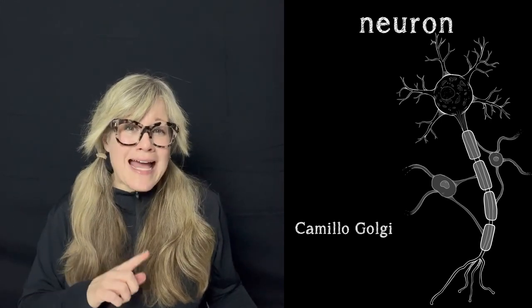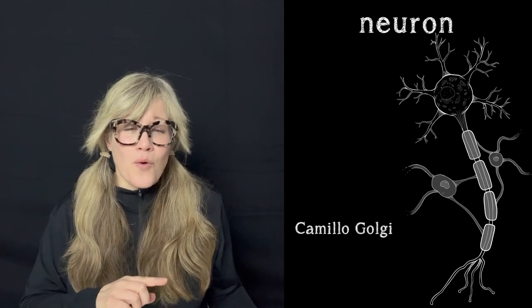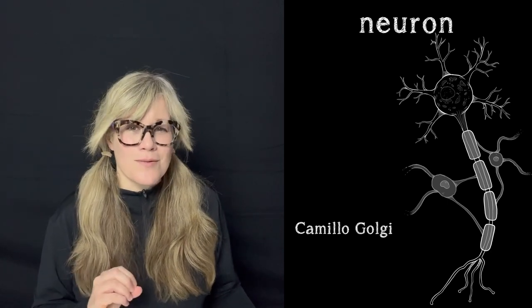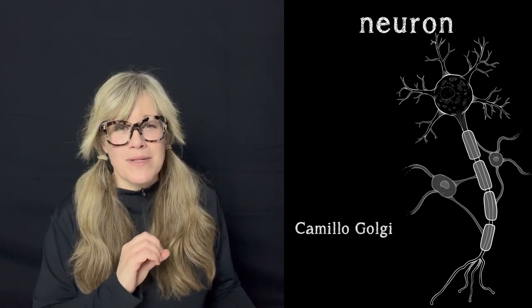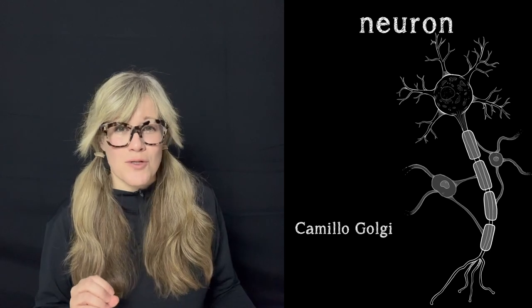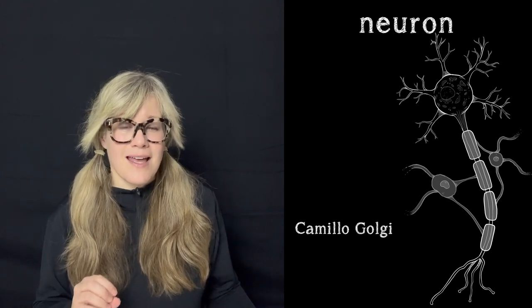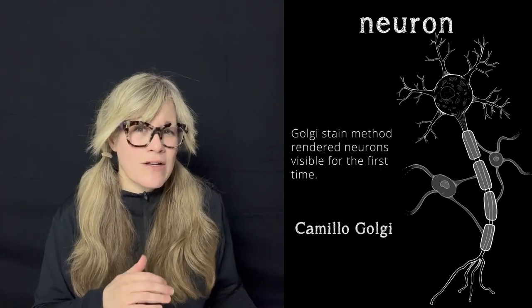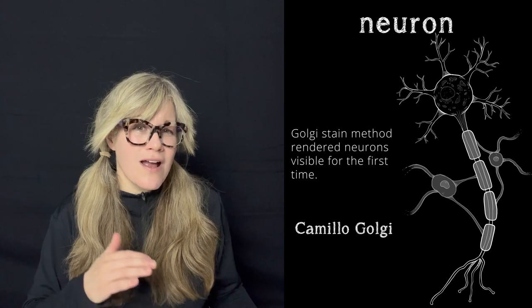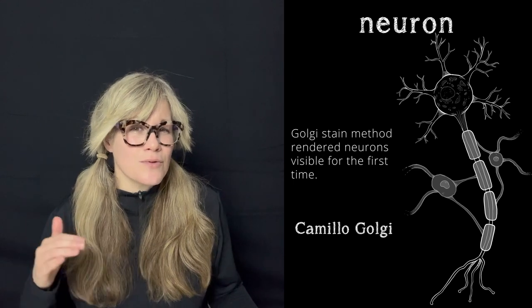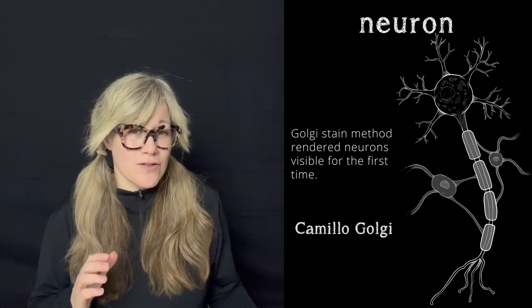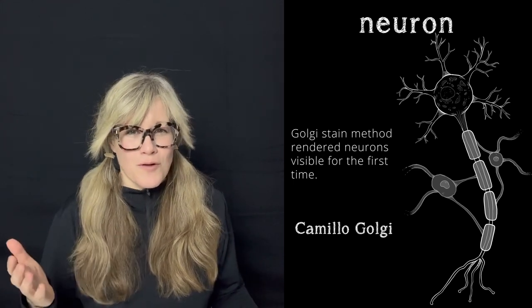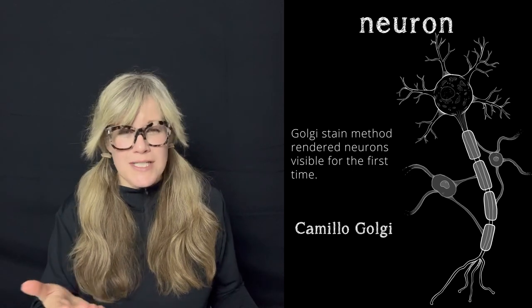Though even having an important organelle named after him slightly pales in comparison to perhaps his most beloved contribution to science, and that was the invention of a staining method that rendered the structure of individual neurons visible for the first time, named, of course, the Golgi stain.